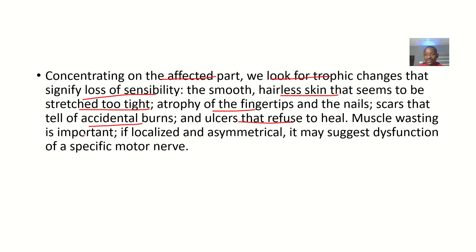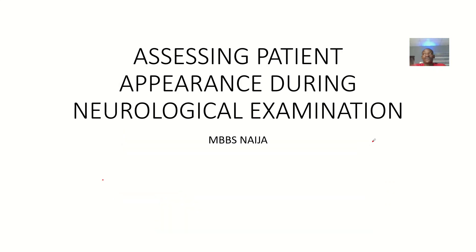Muscle wasting is important to look out for, and whether it is localized or asymmetrical. It may suggest dysfunction of a specific motor nerve. Those are the different things you have to look out for when accessing the appearance of the patient during neurological and physical examination.